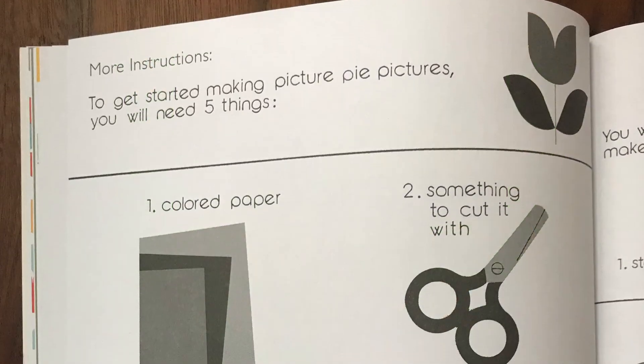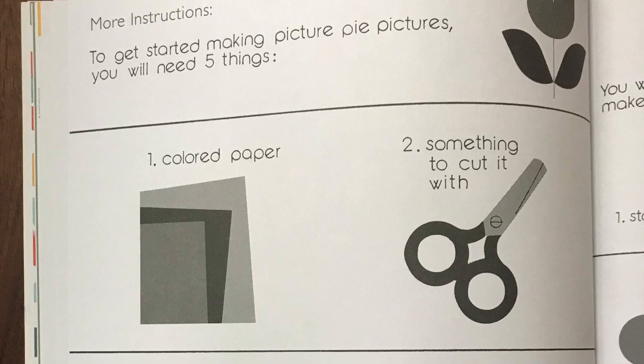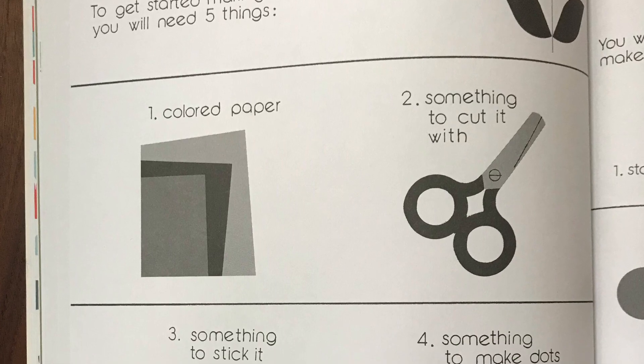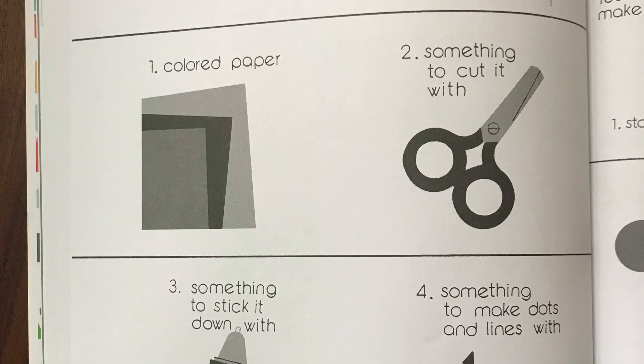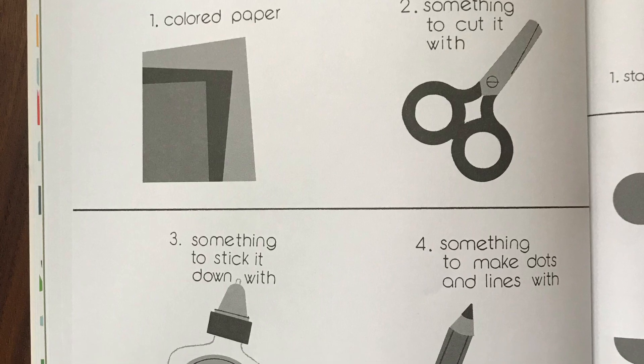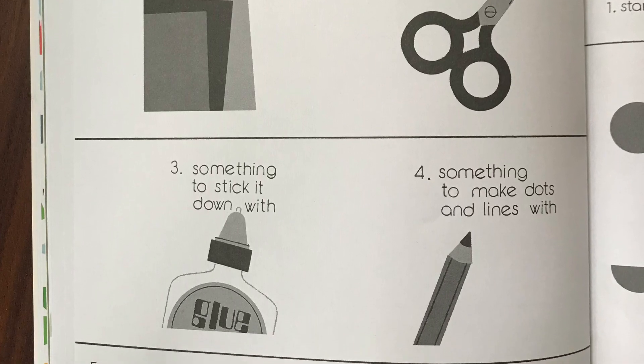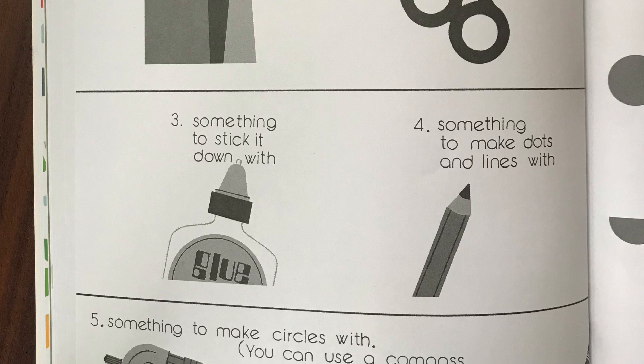To get started making picture pie pictures, you will need five things: colored paper, something to cut with, something to stick it down with, something to make dots and lines with, and something to make circles with.